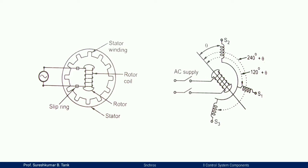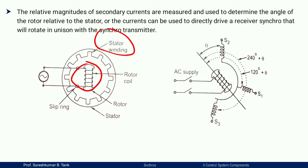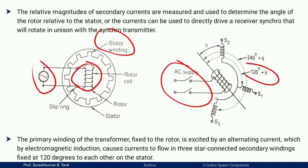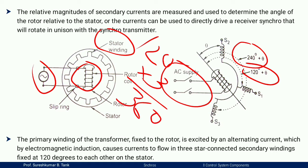The basic construction includes stator winding, rotor winding, slip ring, and rotor coil. The stator is the stationary part and the rotor is the rotating part. AC supply is given to the rotor. The rotor rotates 120 degrees per phase; one phase times three phases equals 360 degrees, covering full rotation.